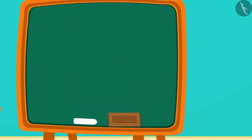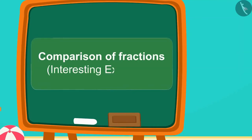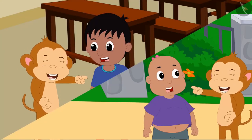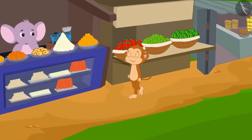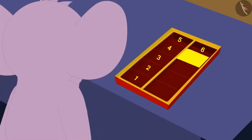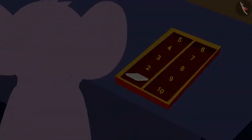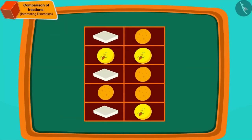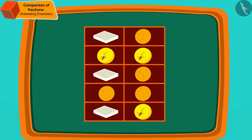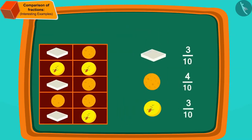Hello children, in this video we will see some interesting examples of identifying and comparing fractions. Babban does a lot of mischief with all the people in the village. Today, he has come to buy sweets at Appu's sweet shop. He could not decide which sweets he wants to buy. So Appu divided the sweet box into ten equal parts and put kaju katli, laddu, and peda in the sections in this way. We can write the different sweets in the form of fractions.